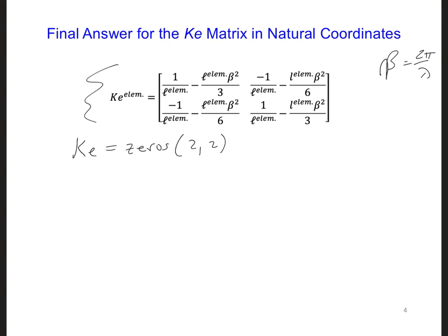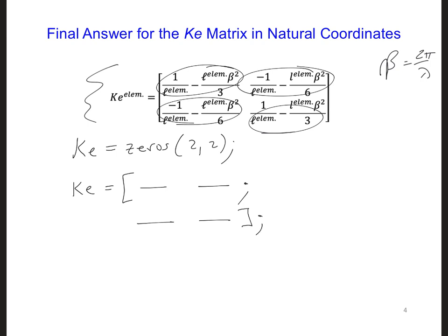And then you can fill in the Ke matrix in terms of L, E, and beta using the following format. So you can say Ke with a bracket, fill in the expressions for the first two, then use a semicolon, and on the next line put in the remaining expressions with a space, then close the bracket with a semicolon at the end.